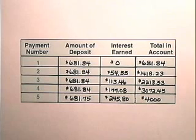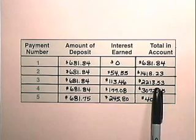The next year, the deposit is $681.84. The interest earned is $1,418.23 times 8%, which is $113.46. So the total in the account at the end of the third year is $1,418.23 plus the $681.84 payment plus the $113.46, which gives us at the end of the third year a total of $2,213.53.